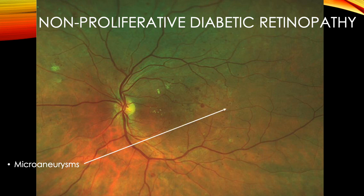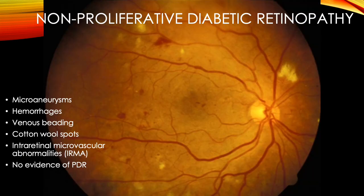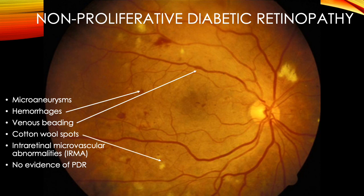Microaneurysms have a tendency to leak fluid, which may cause swelling within the macula. Here is another left eye with non-proliferative diabetic retinopathy. In addition to the microaneurysms, we also see dot hemorrhages, cotton wool spots, and venous beading. The cotton wool spots are due to ischemia causing infarctions of the retina's nerve fiber layer.